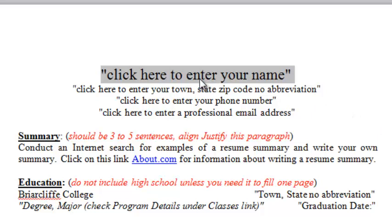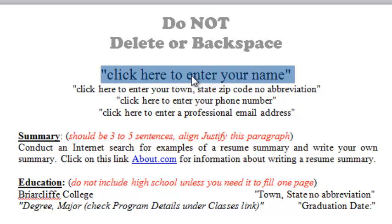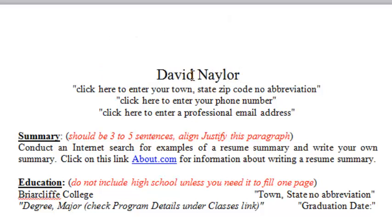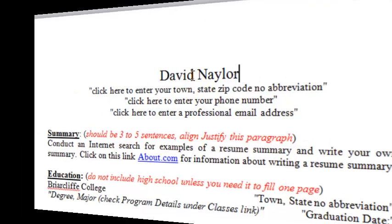If you place your mouse pointer where it says 'click here to enter your name' and left click one time, it will activate this cell. All you have to do is type your name — you don't have to delete or backspace. The cell is already pre-configured and formatted with special font, font size, and alignment.